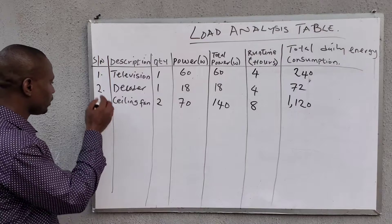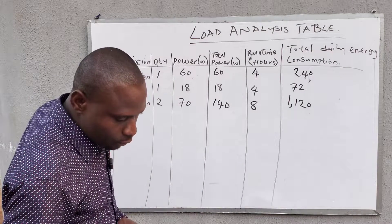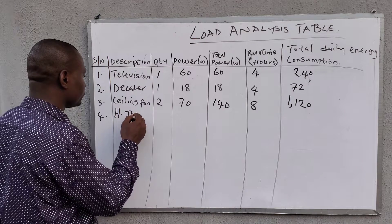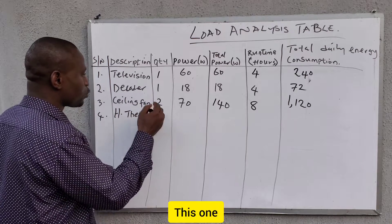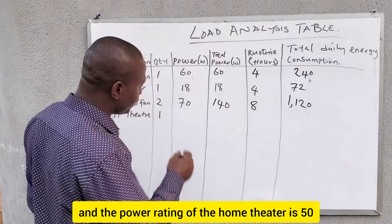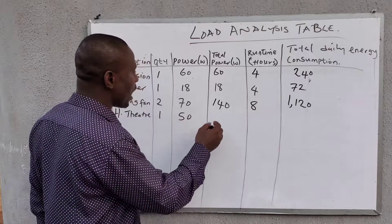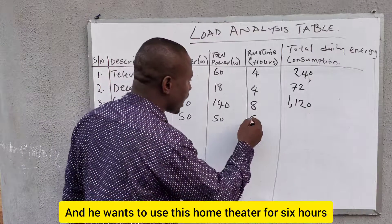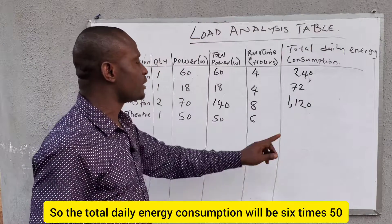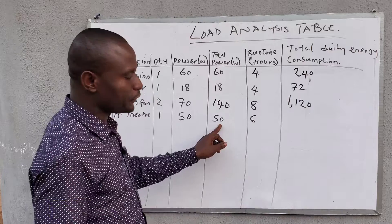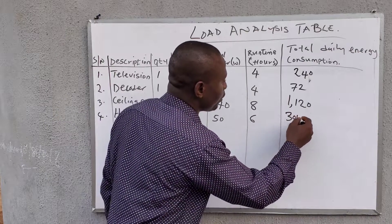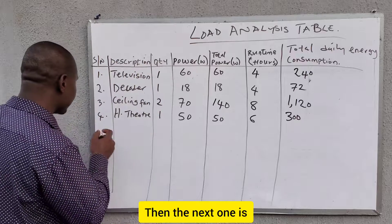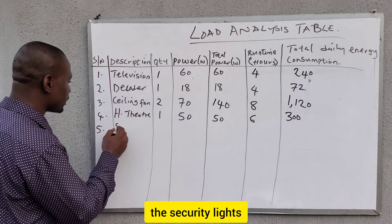Number four is the home theater — quantity one, power rating 50 watts, so total power is 50 watts. The client wants to use this home theater for six hours, so the total daily energy consumption is six times 50, which is 300 watt-hours.